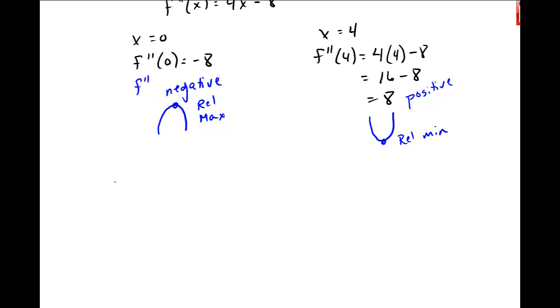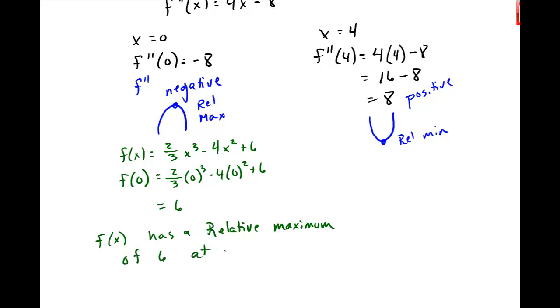So let's go through that. So f at zero, the original function at zero. And this f of x, let me remind you, 2 thirds x cubed minus 4 x squared plus 6. And so you plug in zero here. So f of x has a relative maximum of 6 at x equal to zero.